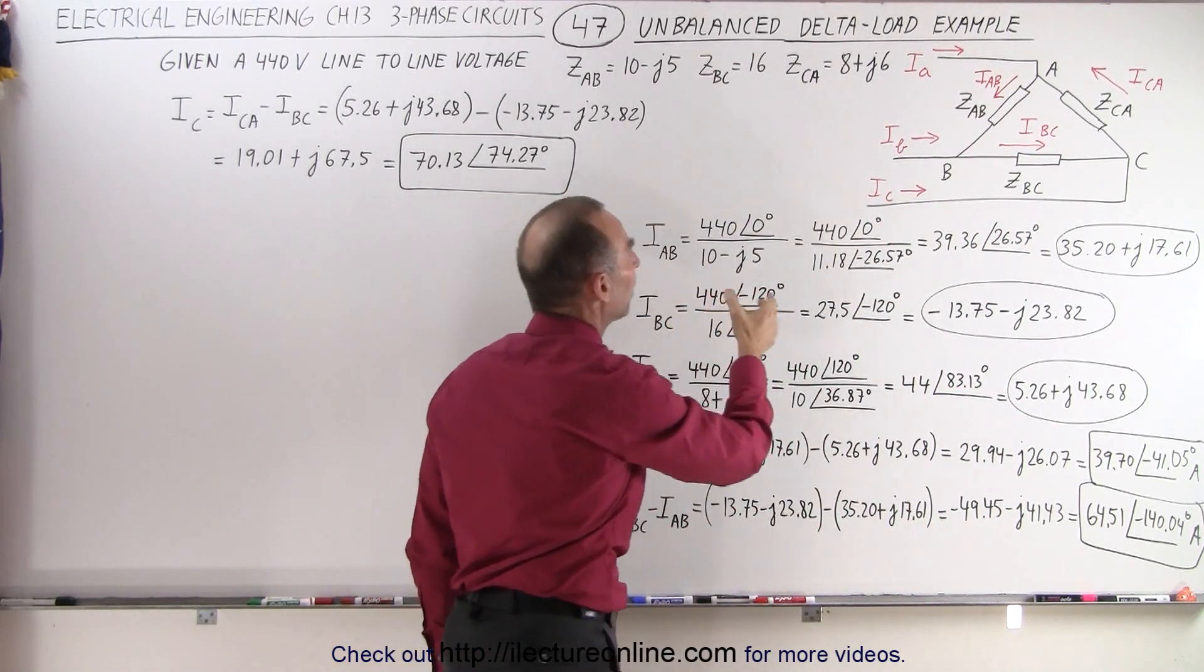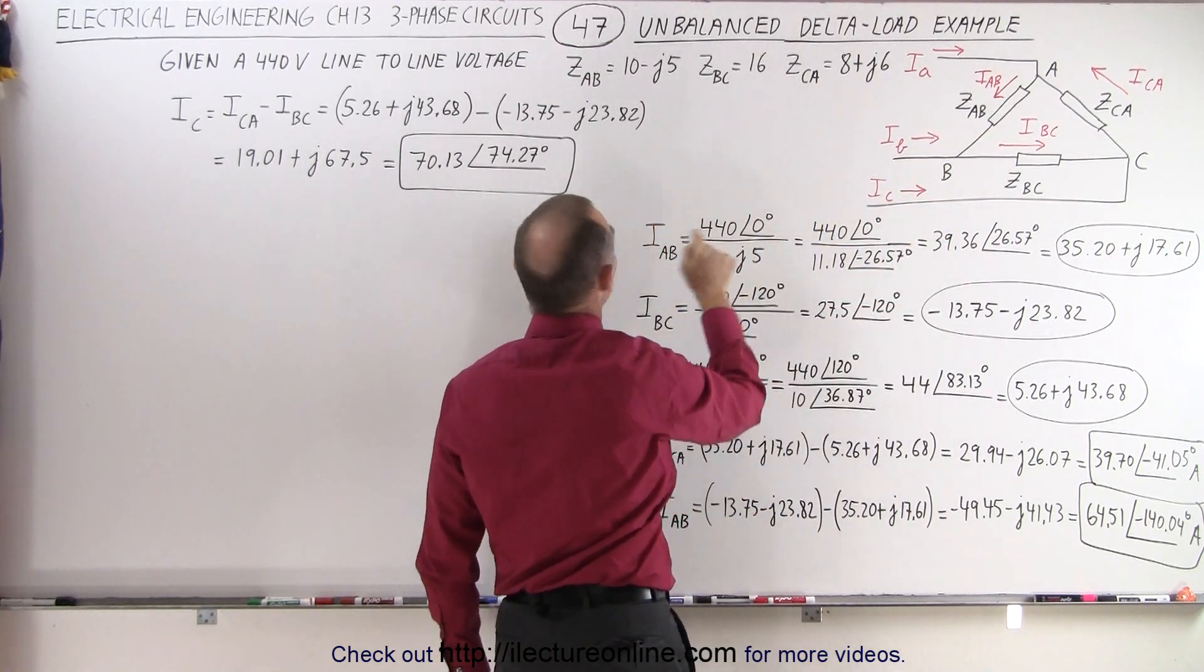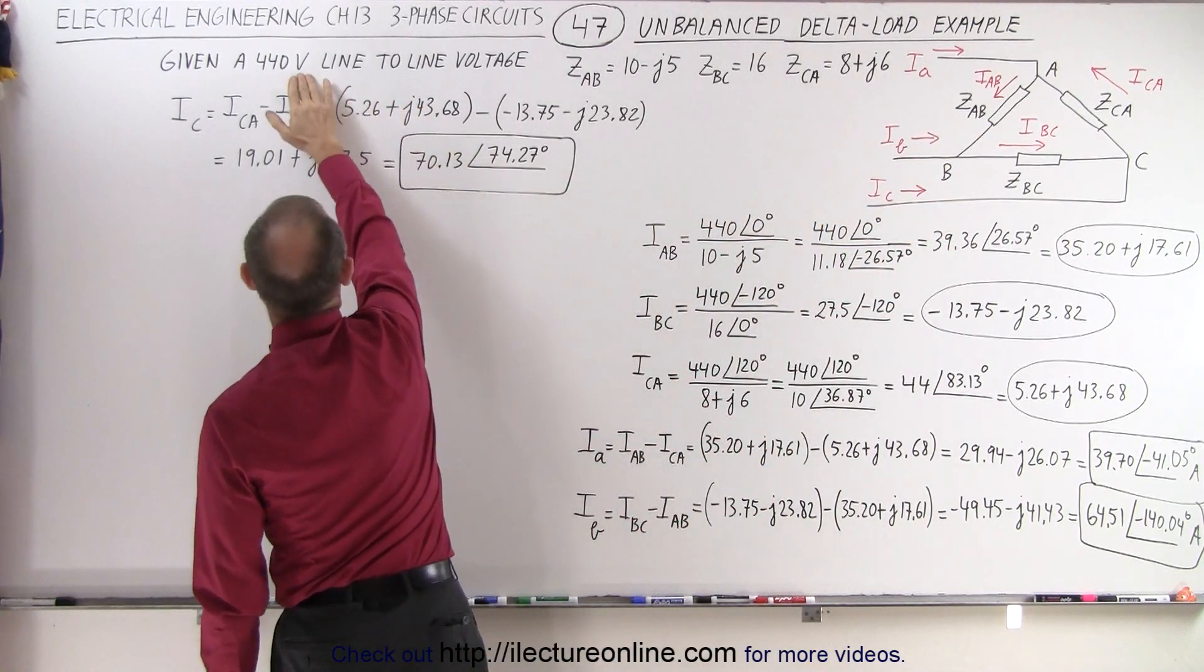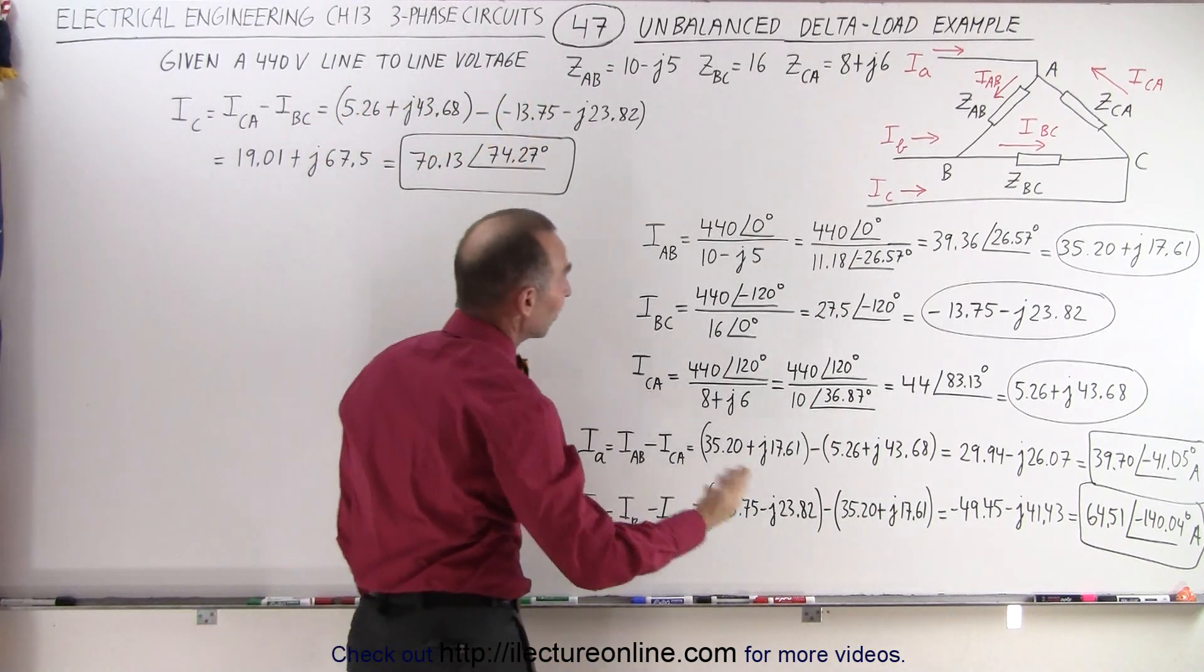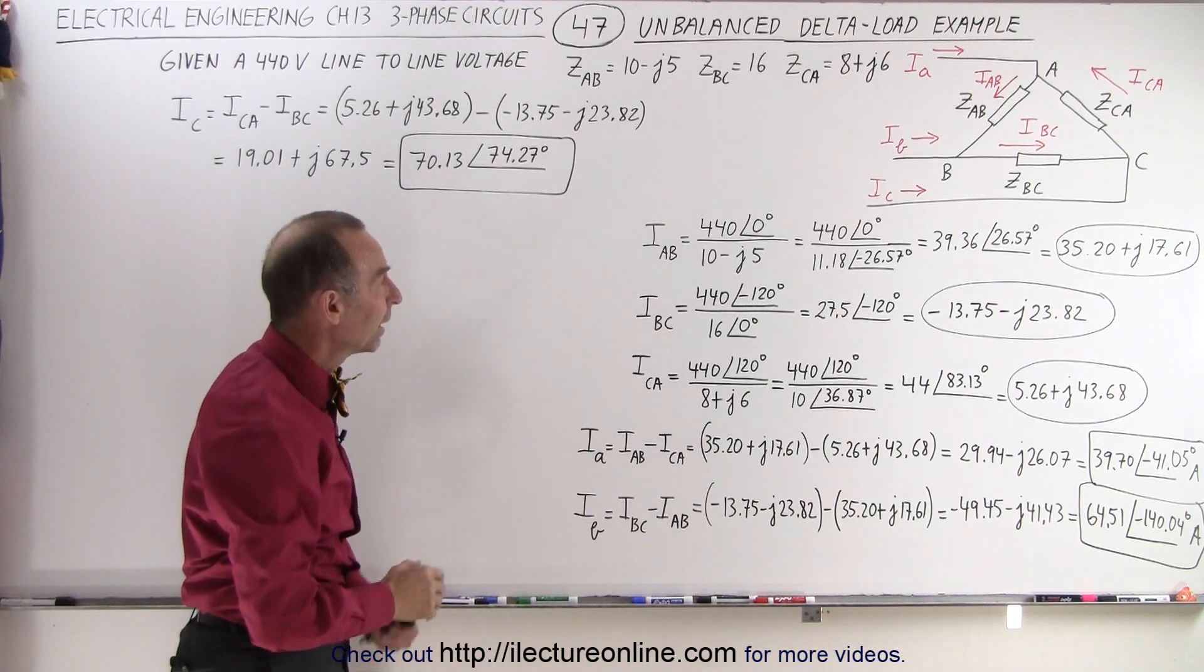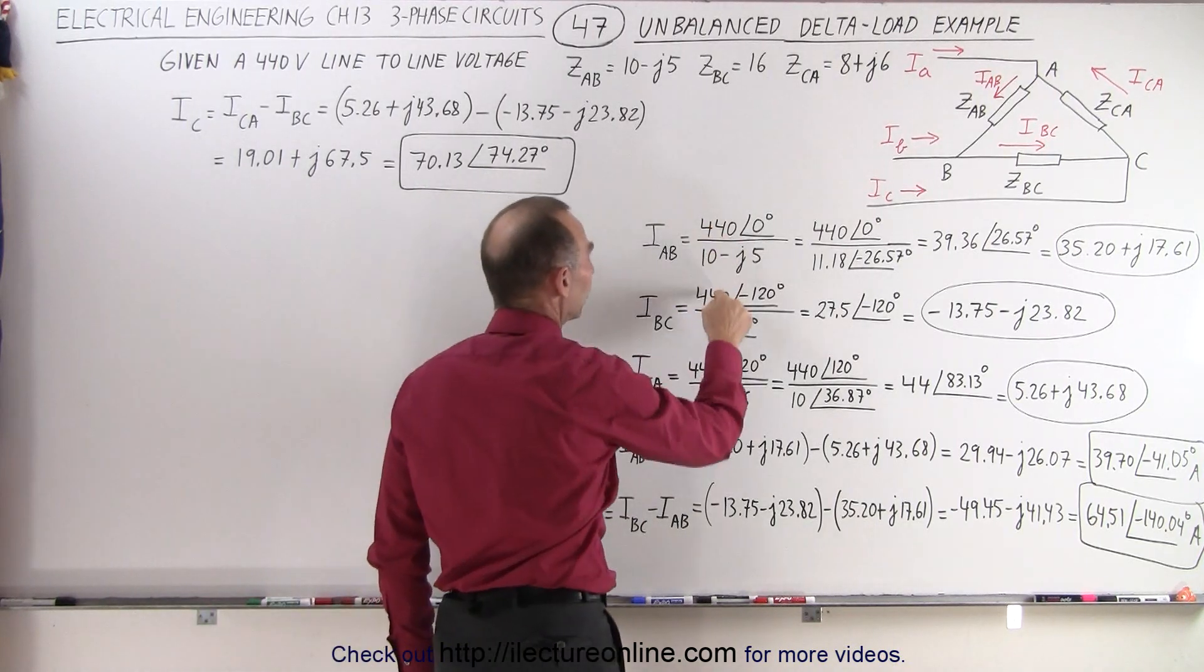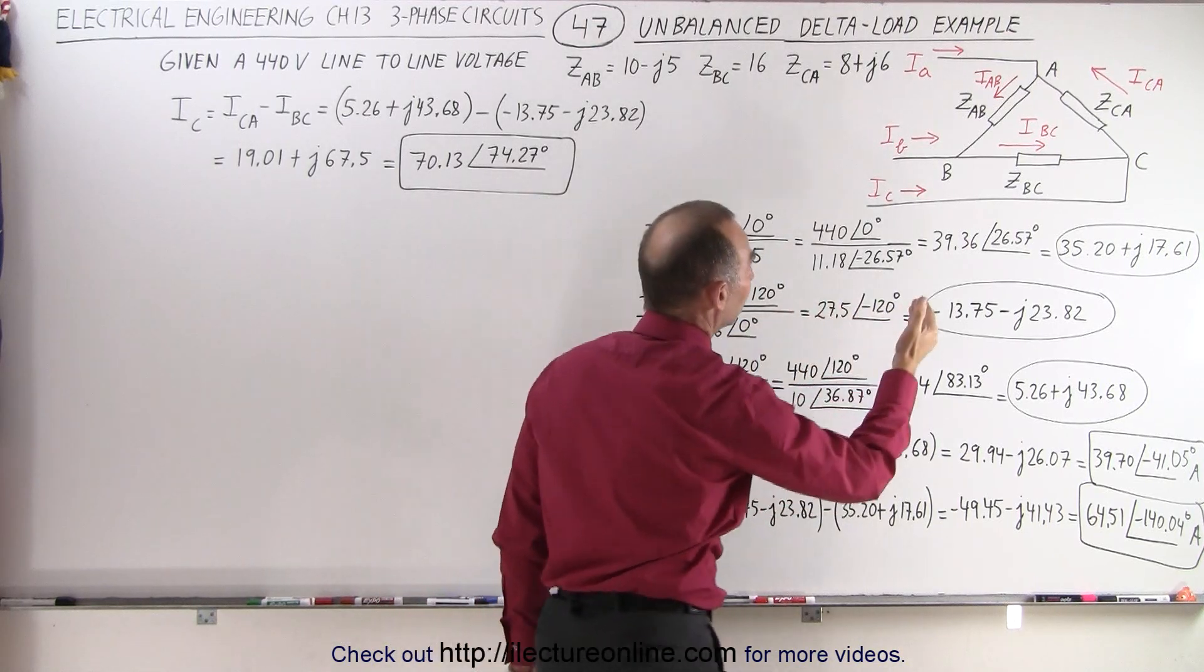So Iab, by definition, is going to be the line voltage divided by the impedance. So the line voltages are given 440 volts at a phase angle of 0, 120, and minus 120, and minus 240, which is the same as plus 120.